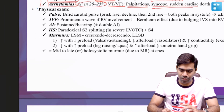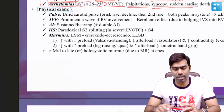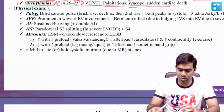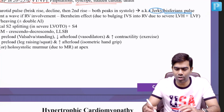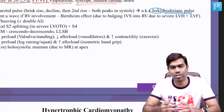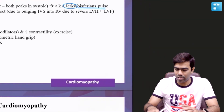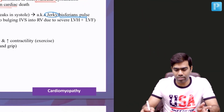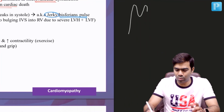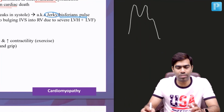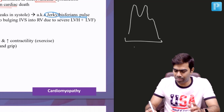Coming to physical examination, which is very important for exams: the pulse of HCM is classically of bisferiens character, or more appropriately called a jerky pulse. In a classic bisferiens pulse, you will have two peaks in systole and both peaks will be equal. This is typically seen in a patient with severe AR or a patient with combined AS and AR.